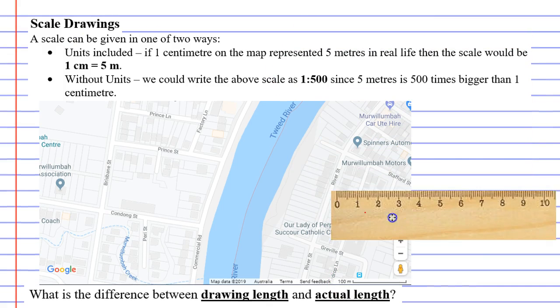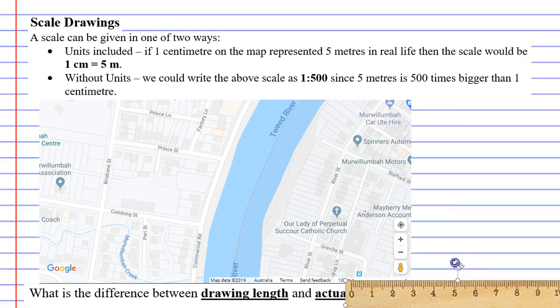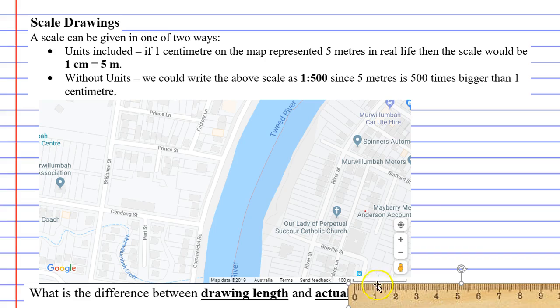So we're going to grab our ruler and we're going to measure the length of this line. That line when measured is 2.5 centimeters. So we'll write that down. 2.5 centimeters and we are told that that represents 100 meters.